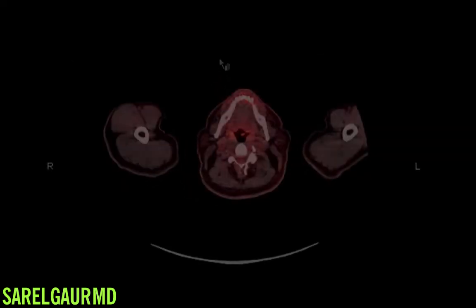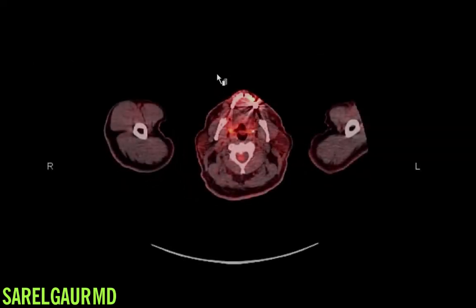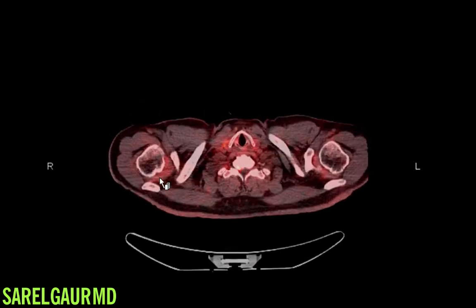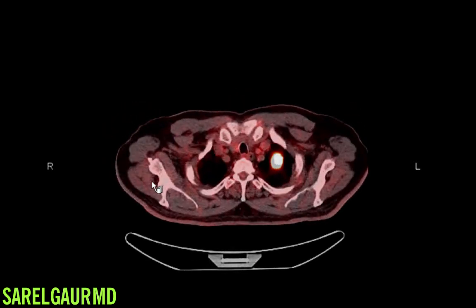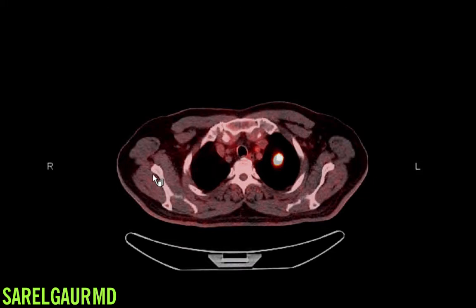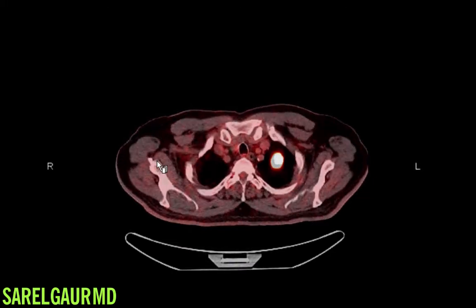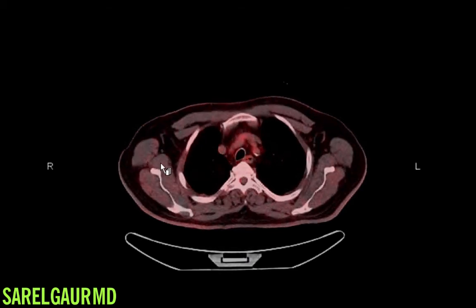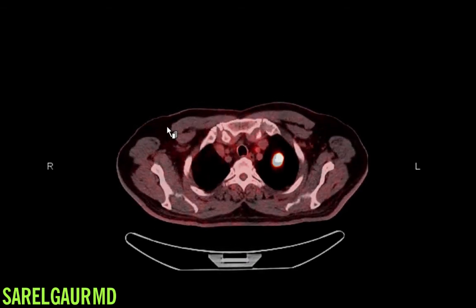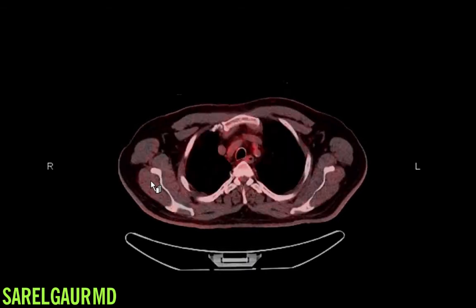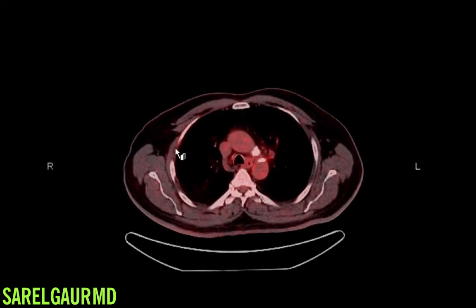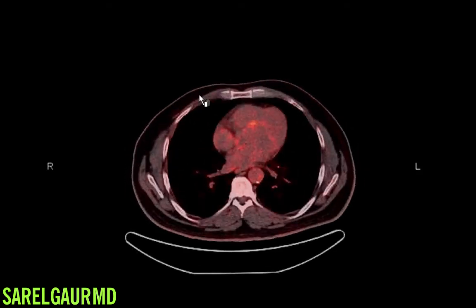Next, I'm going to look at the fused axial images. This fuses the PET data with the CT data. I can see that this nodule is very bright or very orange — it's taking up a lot of the PET agent. This means that this nodule is very hypermetabolic, and this confirms my feeling that this nodule could represent cancer.